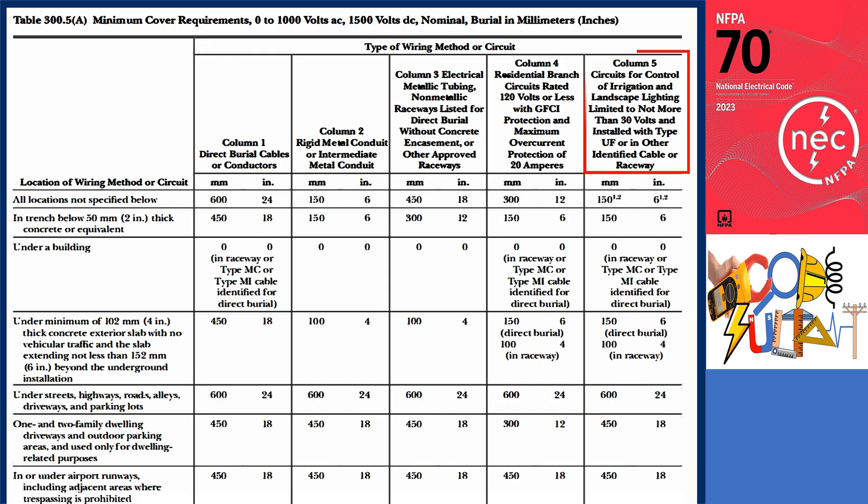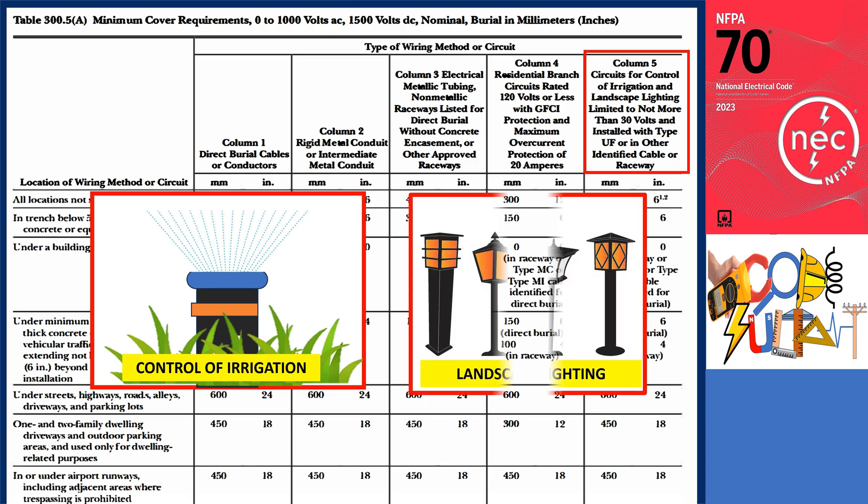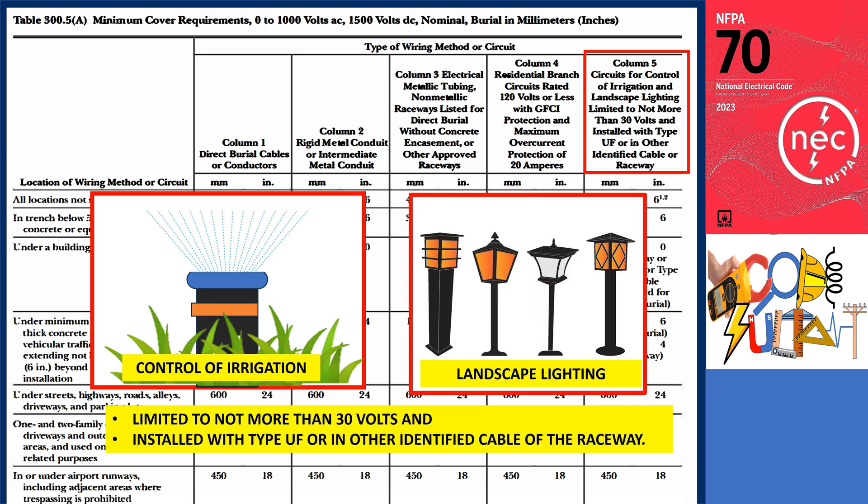Column 5 covers circuits for irrigation and landscape lighting, limited to not more than 30 volts and installed with type UF or other identified cable or raceway.